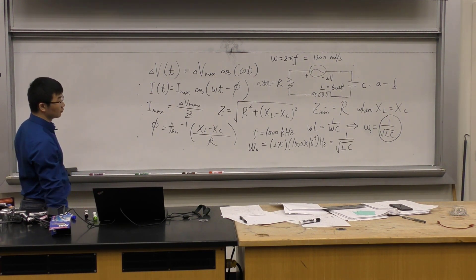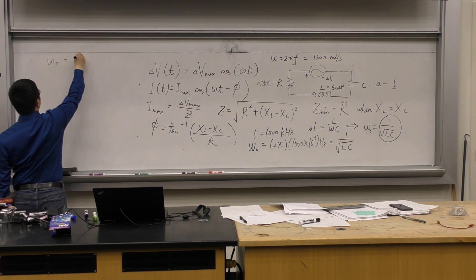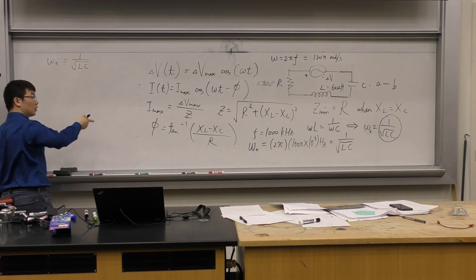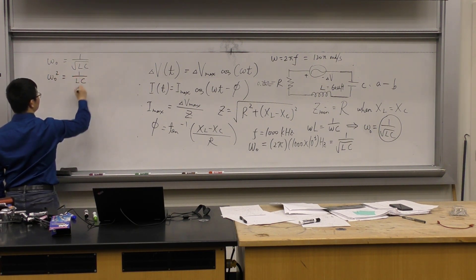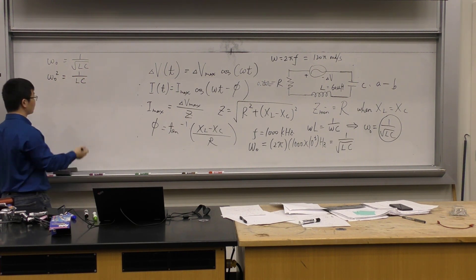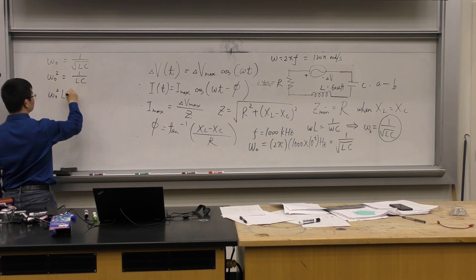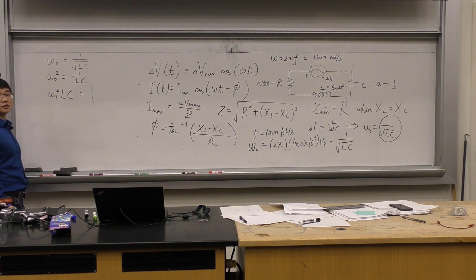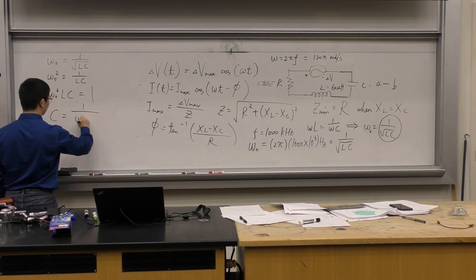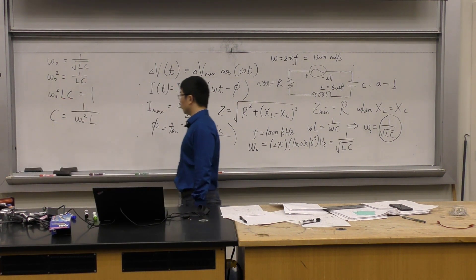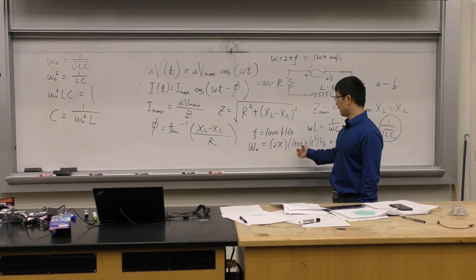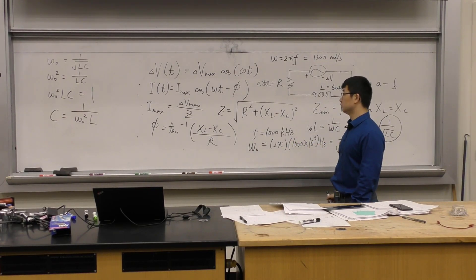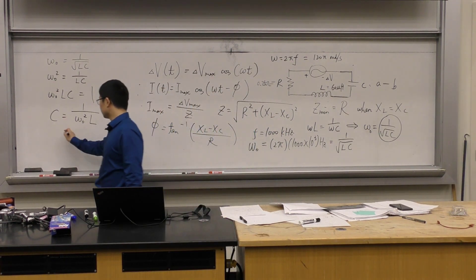Rearranging the resonance equation: ω₀² = 1/(LC), so C = 1/(ω₀²L). Plugging in ω₀ = 2π × 1000 × 10³ Hz and L = 60 μH gives C = 4.22 × 10⁻¹¹ F (approximately 42.2 pF).